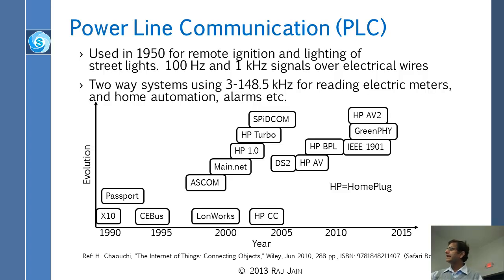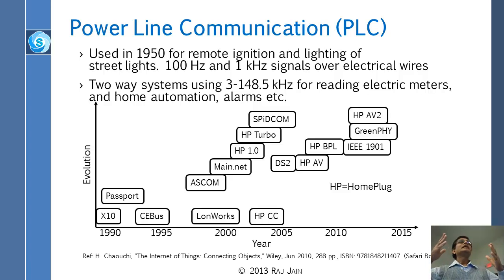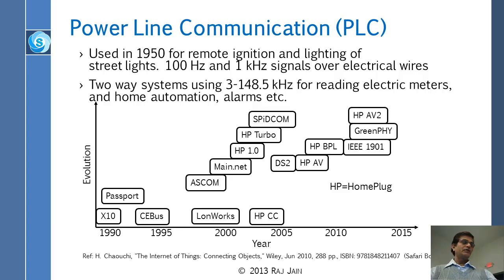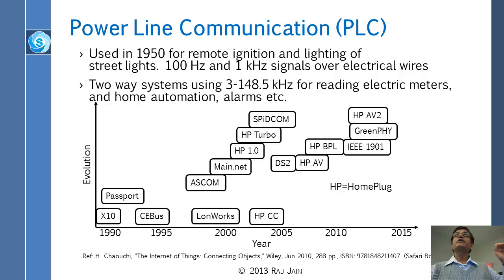Then around 1990 came X10. In that time frame, if you wanted to remotely control anything in your home, you would buy an X10 device. Next to your bed you'd have a controller — press button one and it turns on the light in room one, press it again and it turns off. You could control any device in your home using X10 devices, which were very cheap, and they worked over the power lines — the electrical wires in your home.